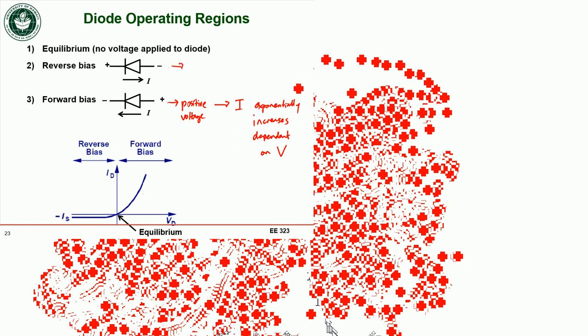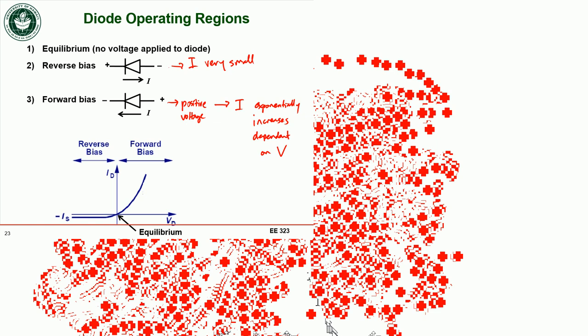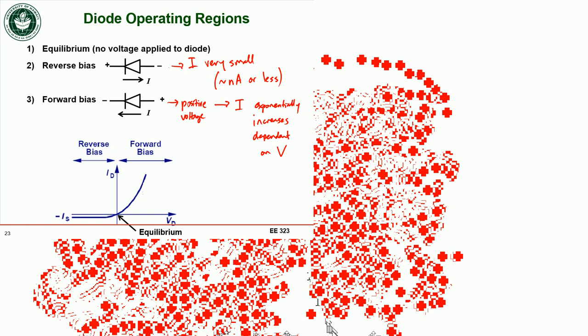The reverse bias current is on the order of nanoamps or less depending on the diode, so to a first approximation it's essentially zero. In forward bias, the current increases very quickly — exponentially — as the voltage increases.